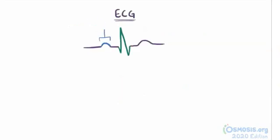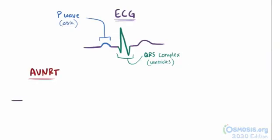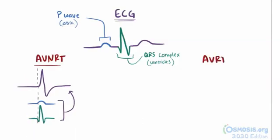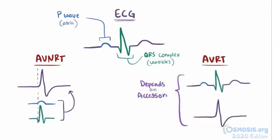With an ECG, the P-wave is the signal from atrial contraction, and the QRS is the signal from ventricular contraction. On an ECG with AVNRT, the P-wave might not be visible, since the signal is getting to the atria and ventricles at almost the same time. So the P-wave starts essentially where the QRS starts, and when you add them together, the P-wave can get buried under the QRS complex. With AVRT, the P-wave might not be buried, depending on where the accessory pathway is located.